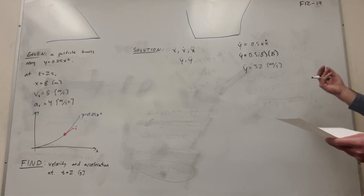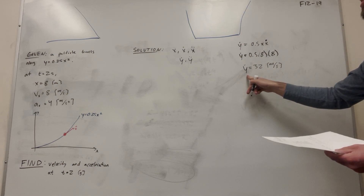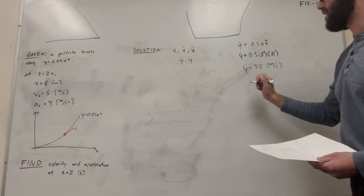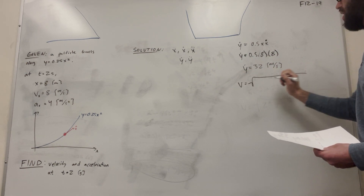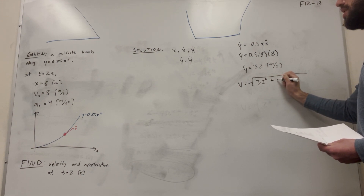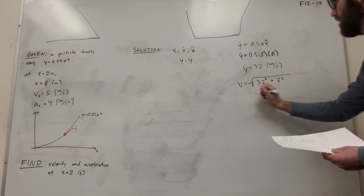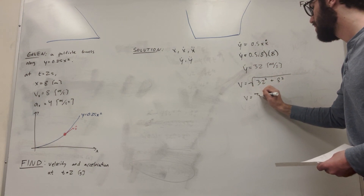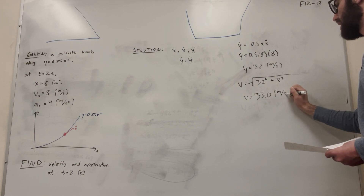Now we need to find the magnitude of velocity. We have y-dot equals 32 m/s and x-dot equals 8 m/s. So velocity equals the square root of 32 squared plus 8 squared, which gives us velocity equal to 33.0 meters per second.